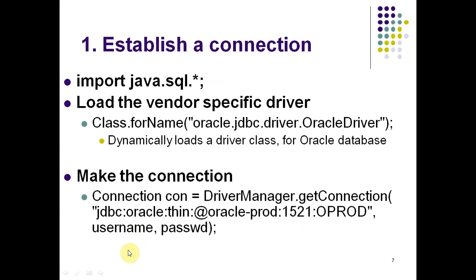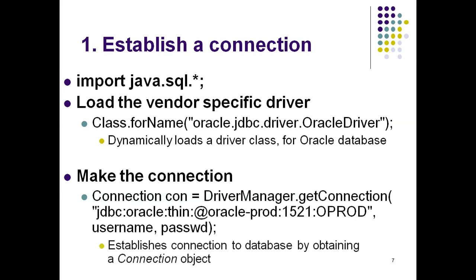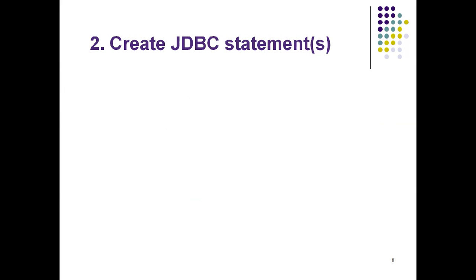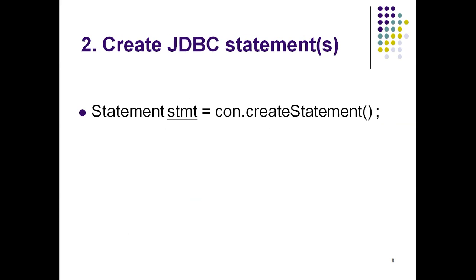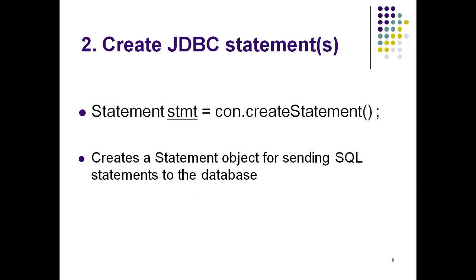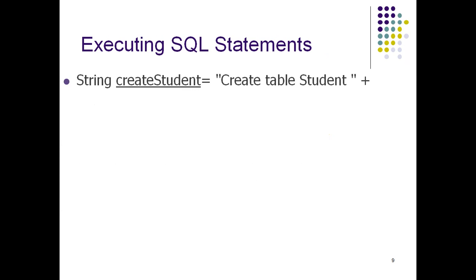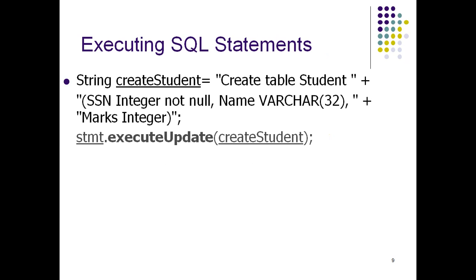The third step is creating a statement. We write: Statement stmt = connection.createStatement(). Here, stmt is the object of the Statement class, and connection.createStatement() is used to create a blank statement object.